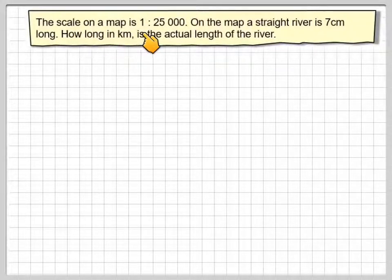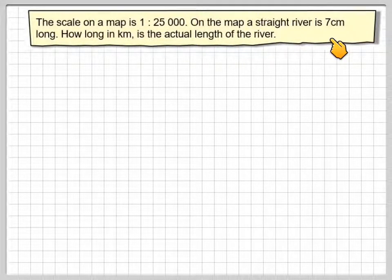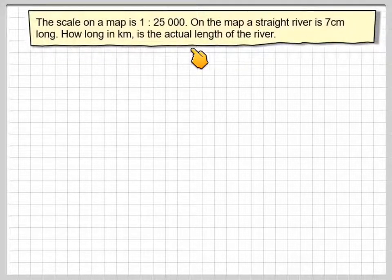The scale on the map is 1 to 25,000. On a map, a straight river is 7 centimetres long. How long in kilometres is the actual length of the river?